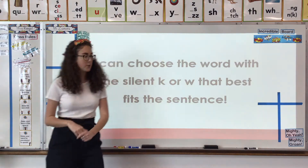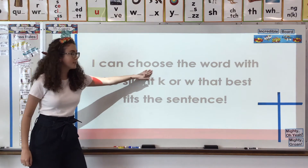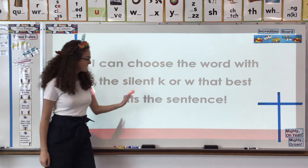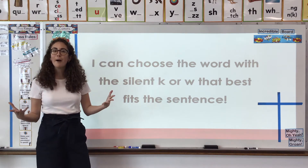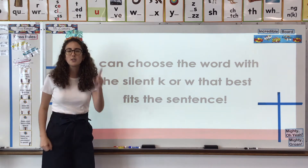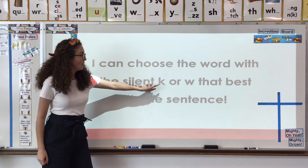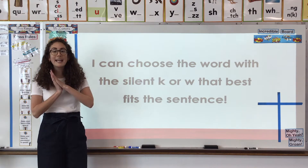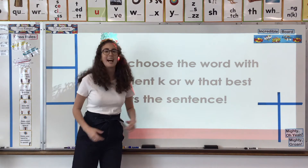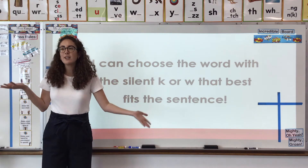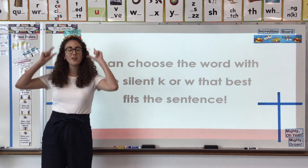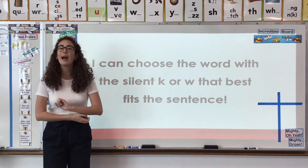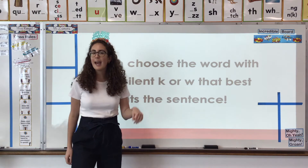So now let's check out our learning target for Tuesday. It says: I can choose the word with the silent K or W that best fits the sentence. We've got two parts to our task today. Number one and most important, we're going to work to decode all those silent letter teams — the ones that have K and W. After we're decoding, we're going to keep going with the activity of choosing words to fit a sentence. But before we can do any of that, we have to make sure we can decode accurately. So let's review K and W and how they're silent.